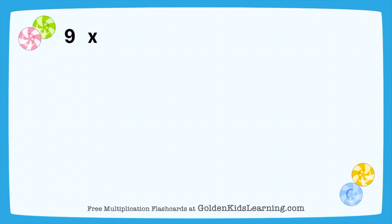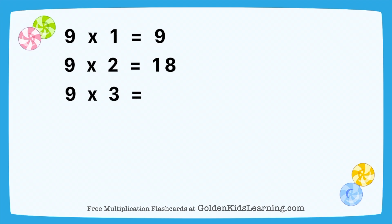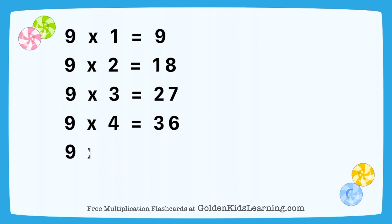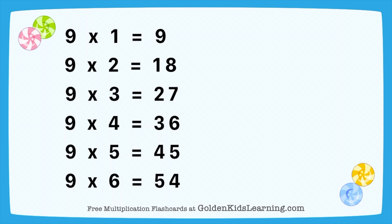9 times 1 equals 9. 9 times 2 equals 18. 9 times 3 equals 27. 9 times 4 equals 36. 9 times 5 equals 45. 9 times 6 equals 54. 9 times 7 equals 63.